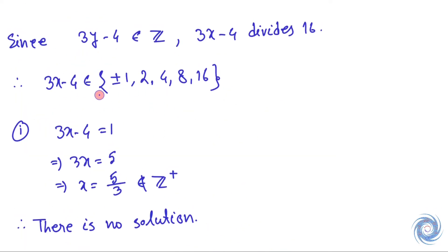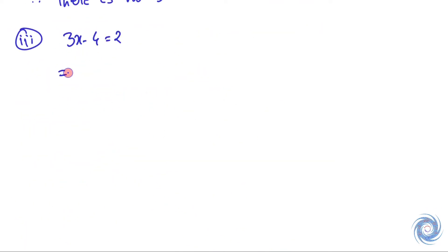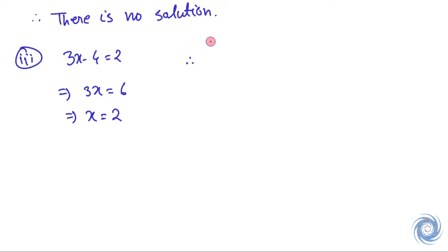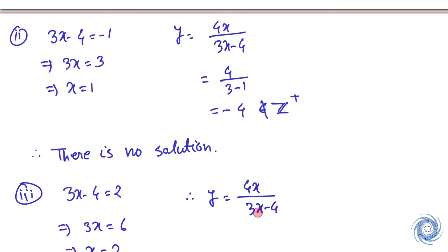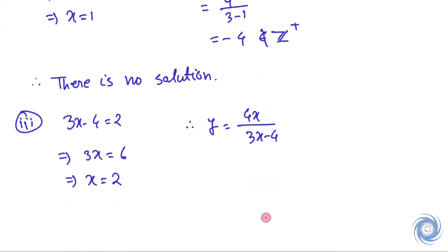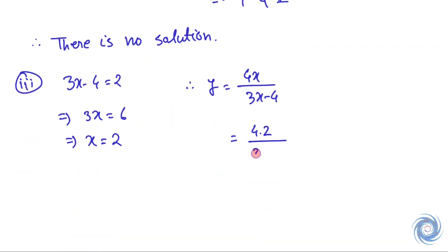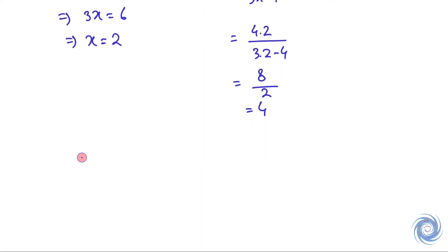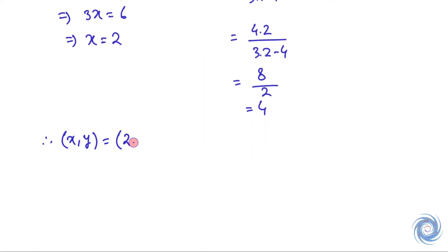Now let us take 3x minus 4 equals 2. From here we have x equals 2. We calculate y using y equals 4x over 3x minus 4, and here we have a solution.